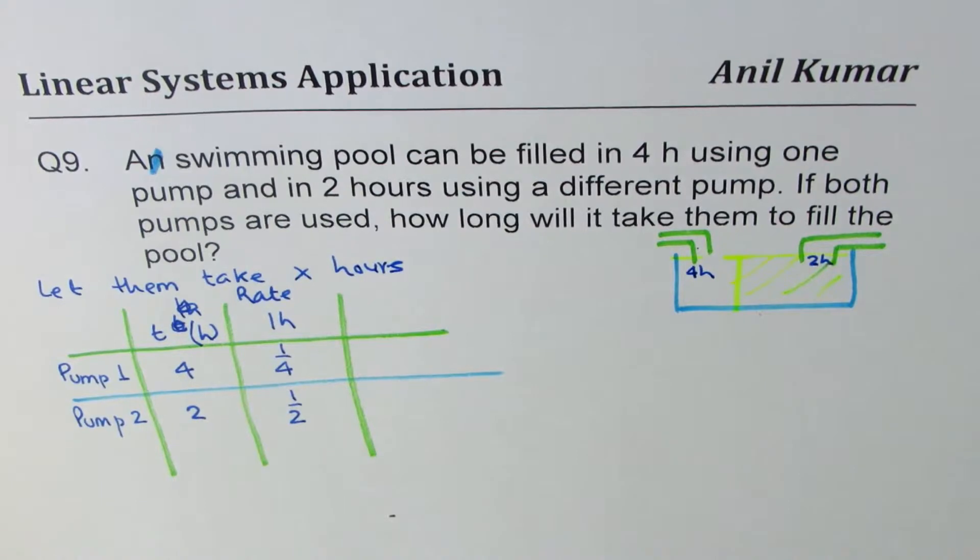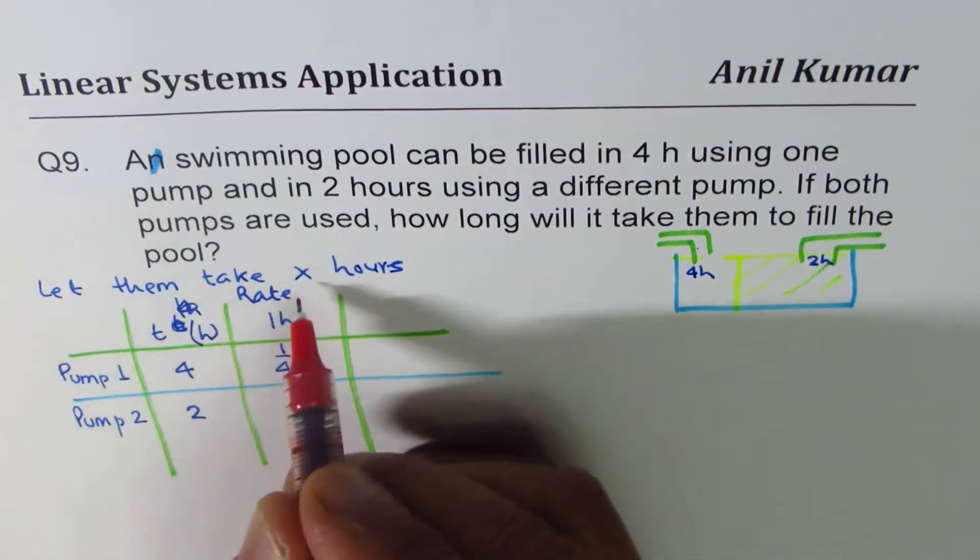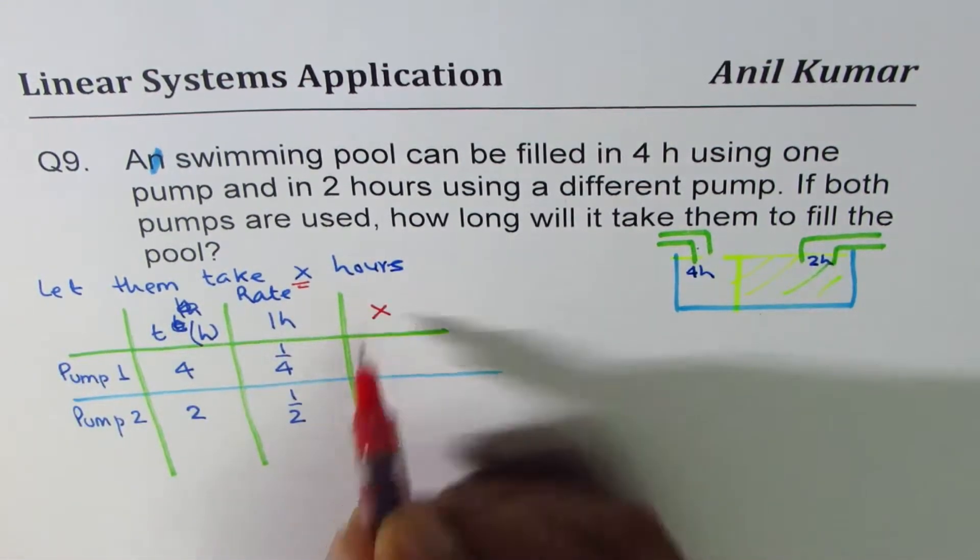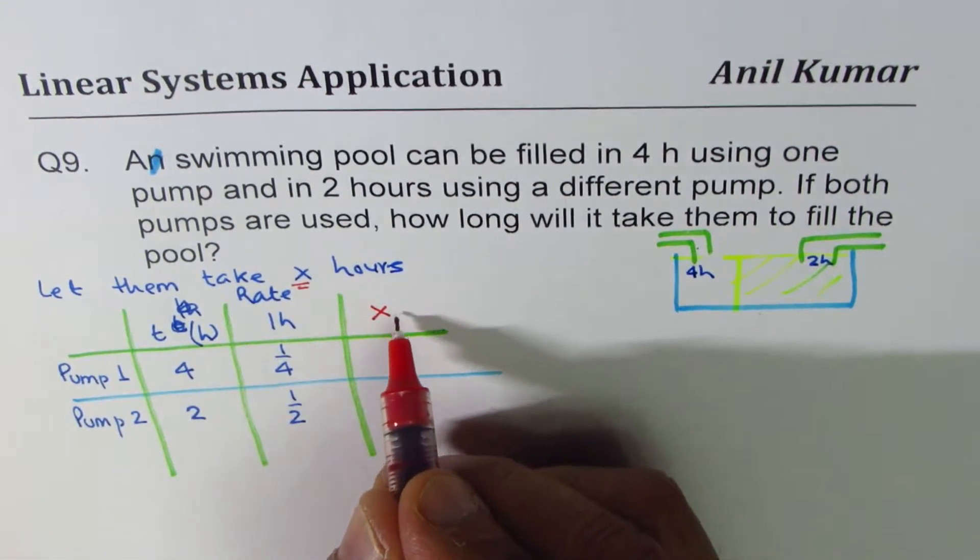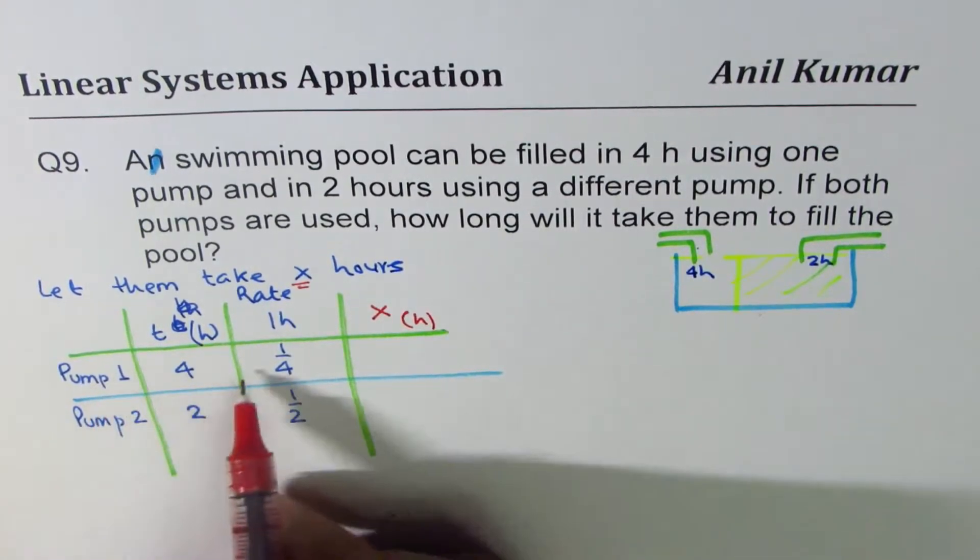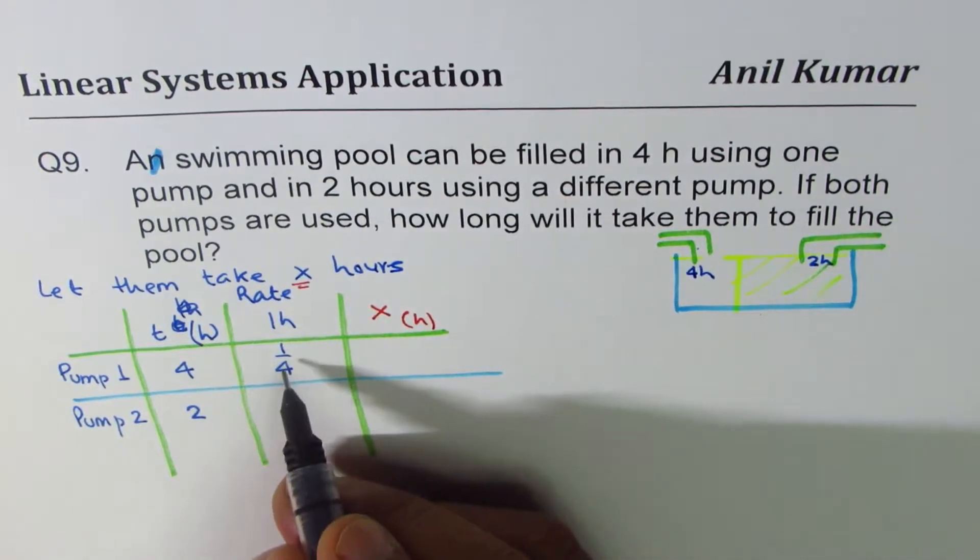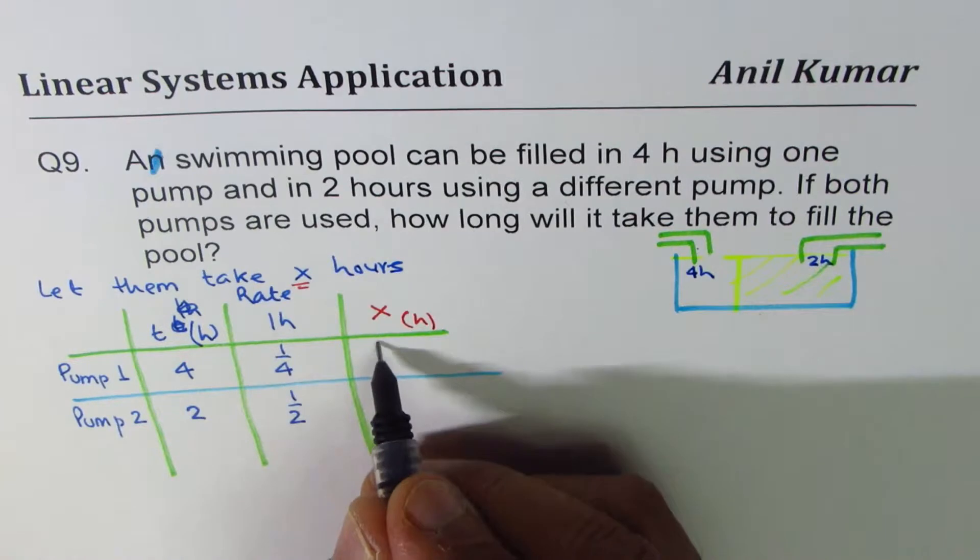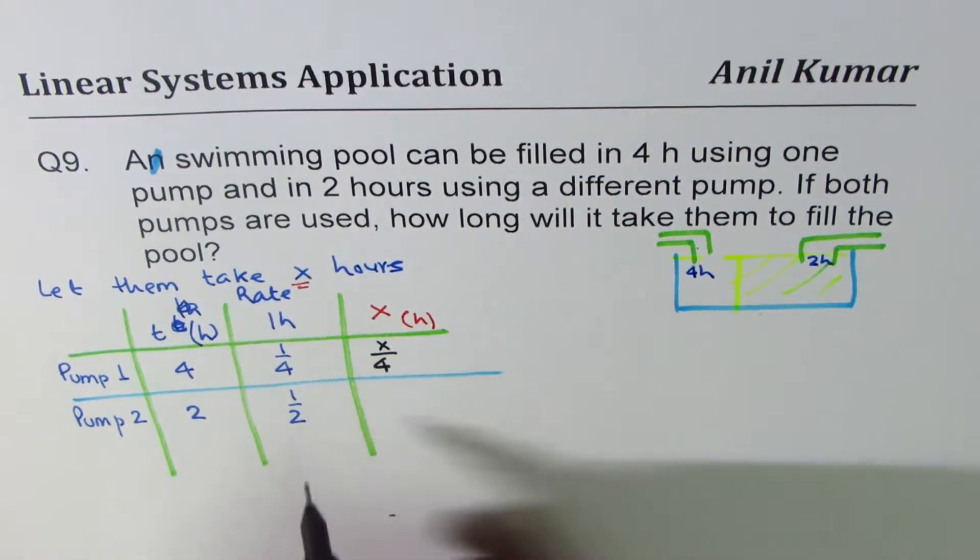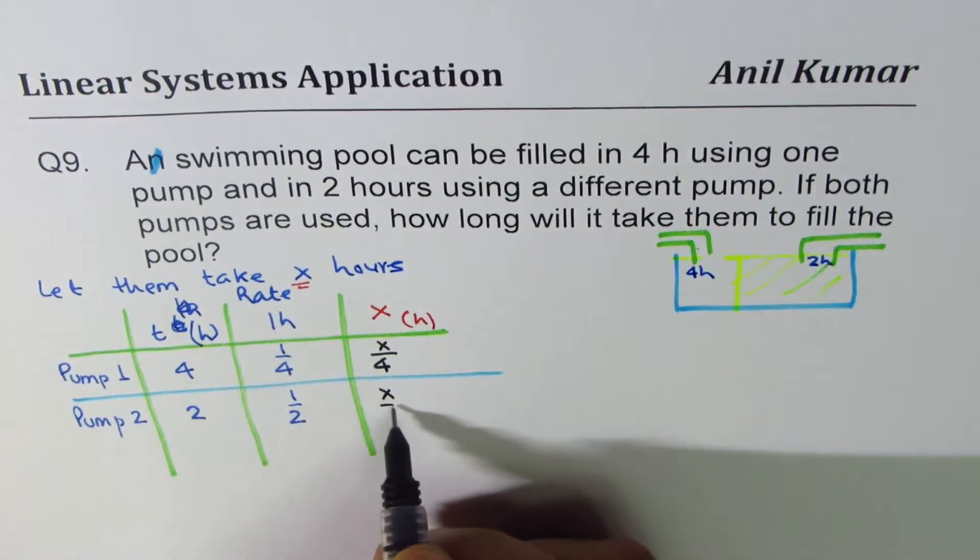Now, let us say that it takes X hours to fill. Let them take X hours to fill. Then in X hours, how much will the first pump fill it? That's what you have to figure out. X times X hours. In one hour, it is one fourth. In X hours, it will be X over four, right? How about this one? X over two.